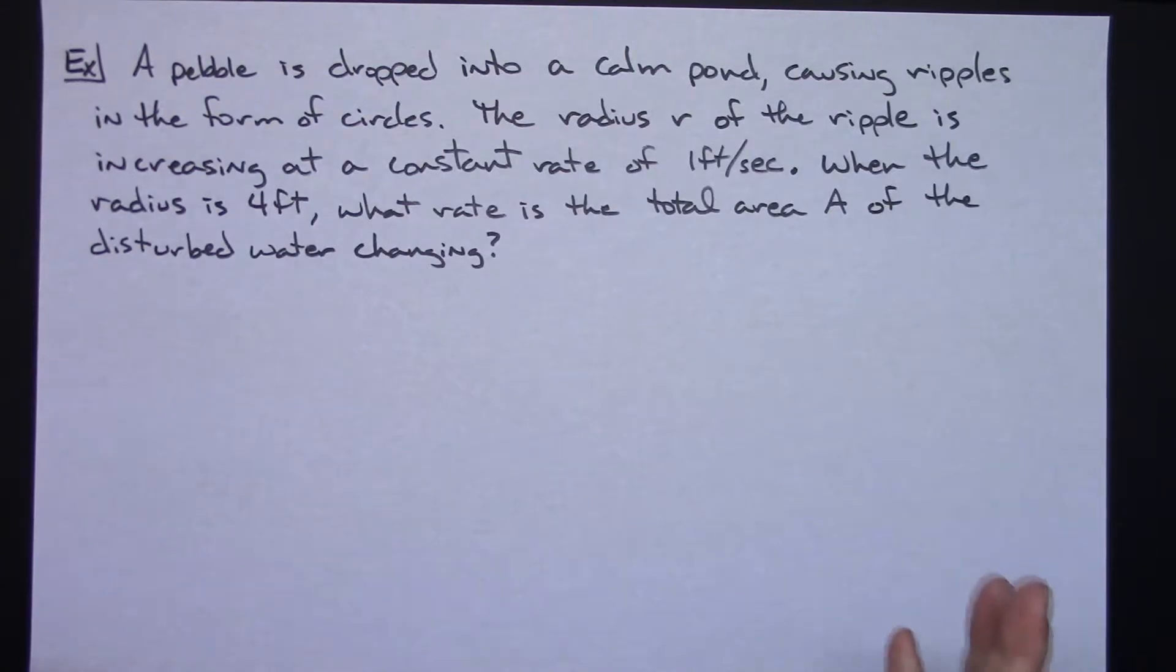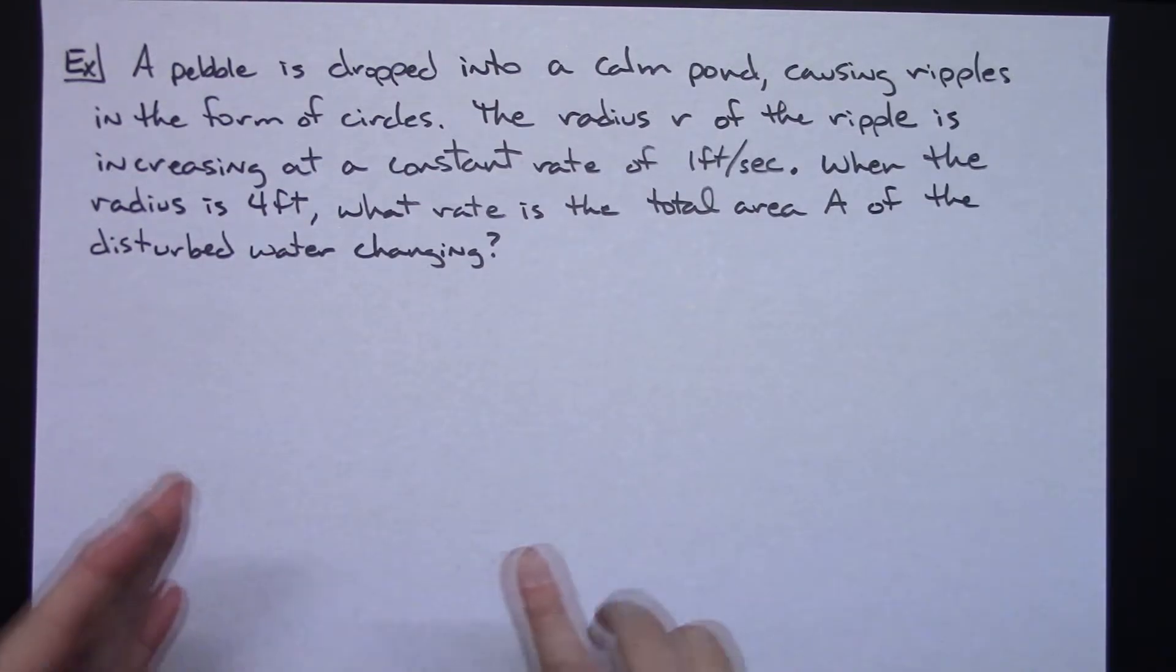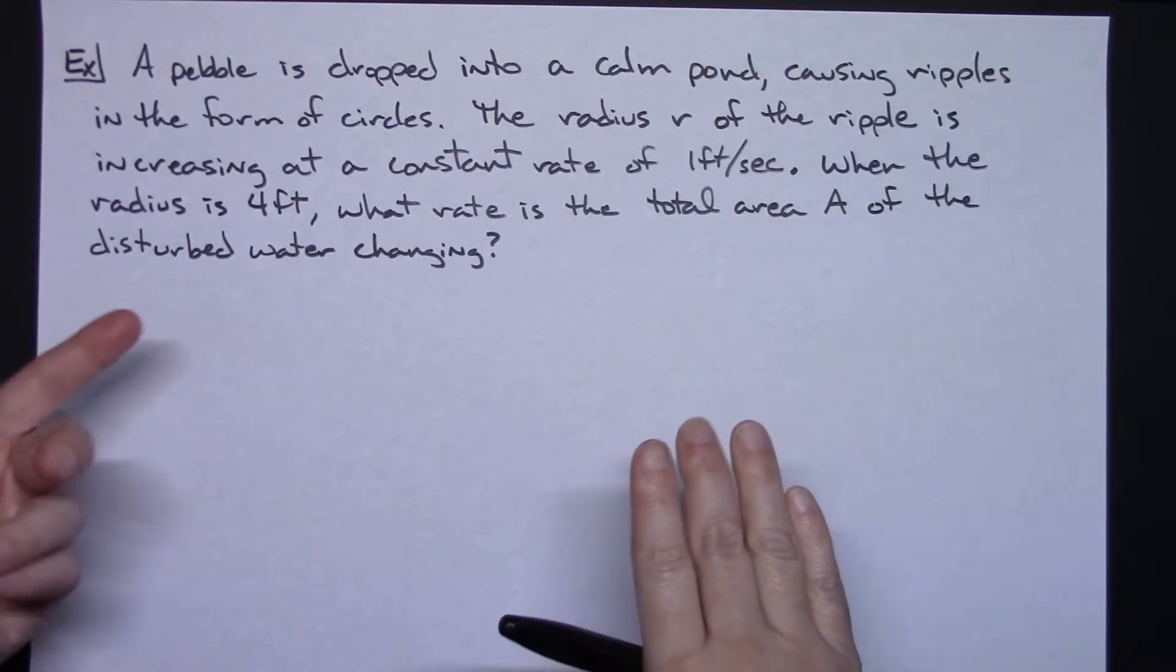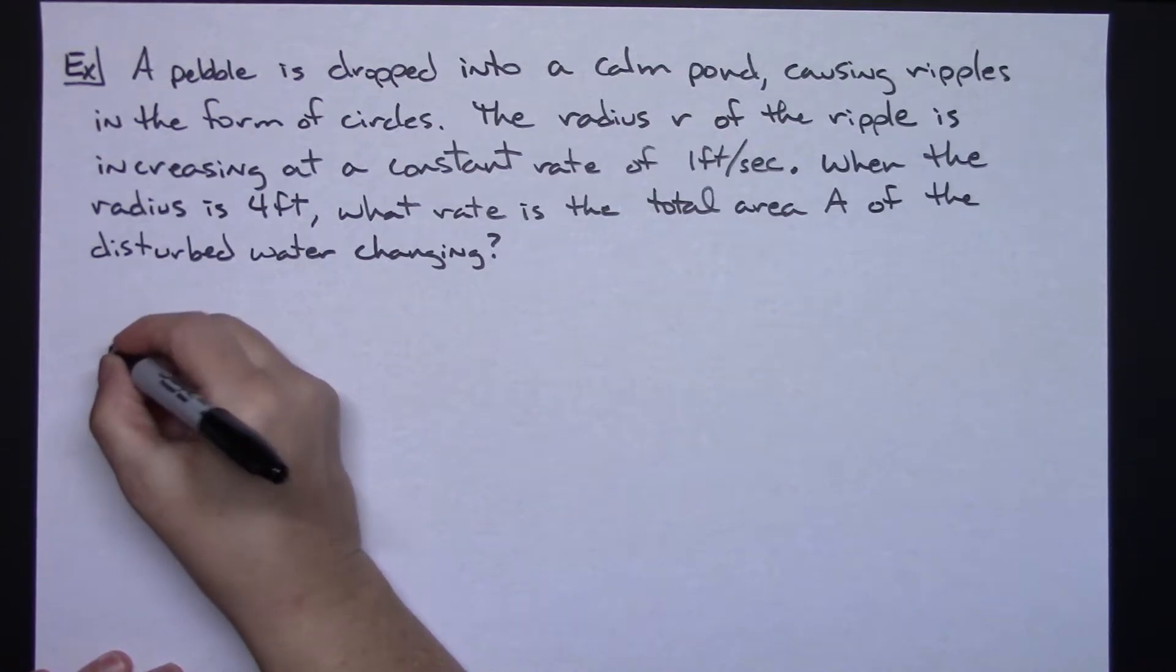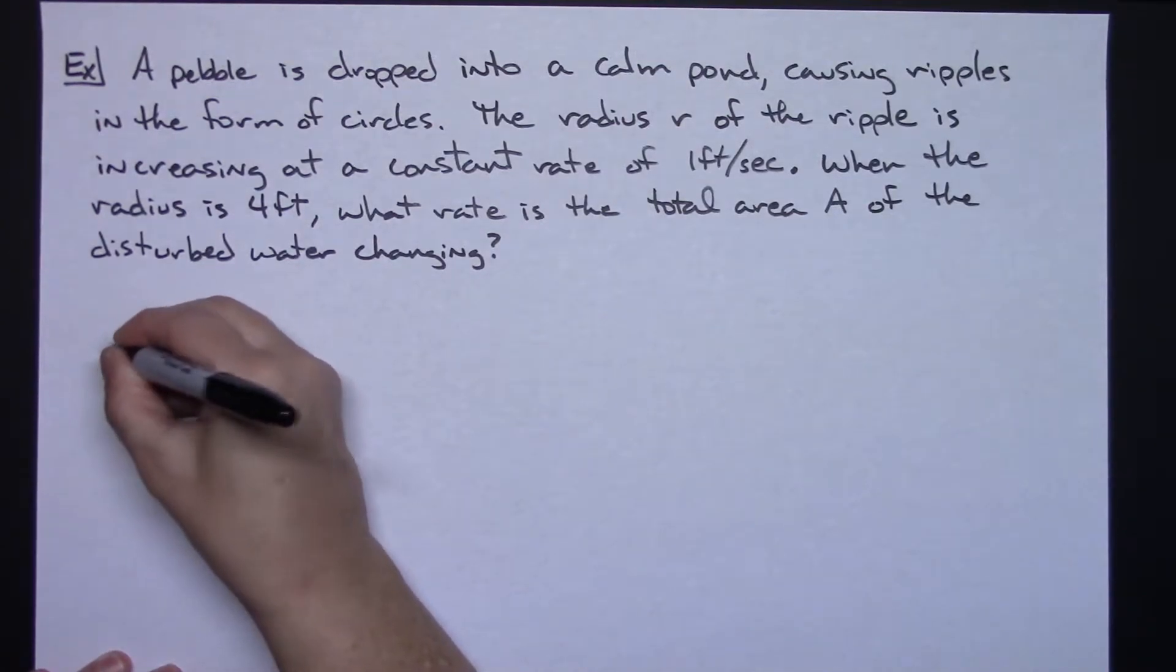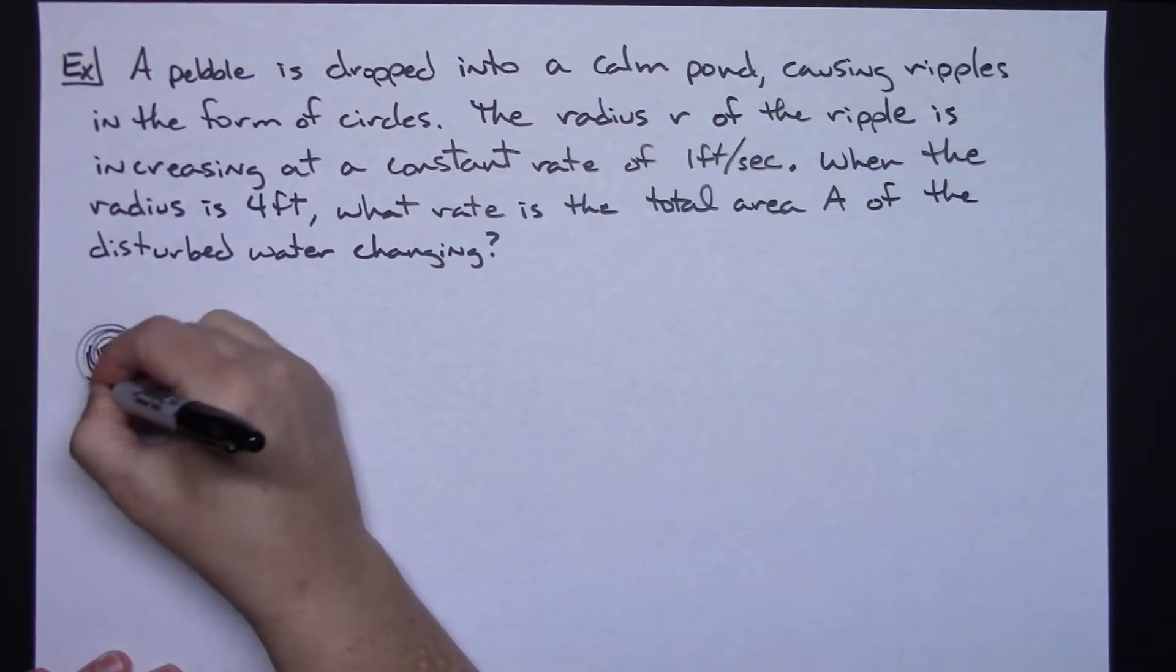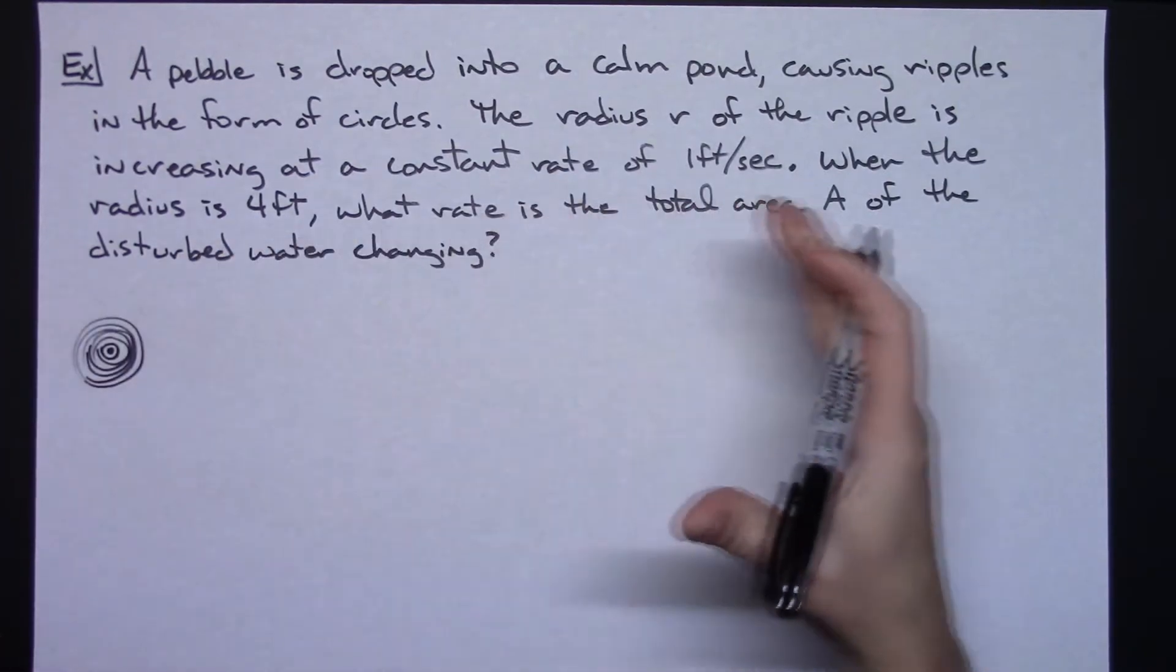We've got a lot of information going on in there so let's kind of piece it out, pull it out into parts, figure out what our given is, our find is, draw a picture. Our picture is going to be pretty simple here because it says it's in the form of circles so we ought to be focusing on a circle here. So if we drop that pebble in, the ripples, and just draw several, very poorly drawn circles but all right there we go we've got ripples coming out and they're circles.